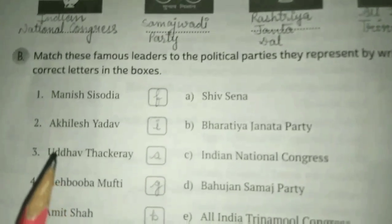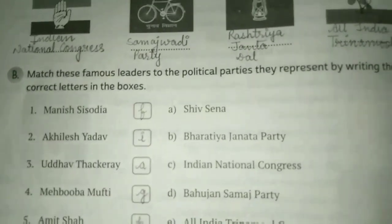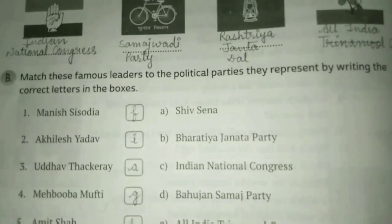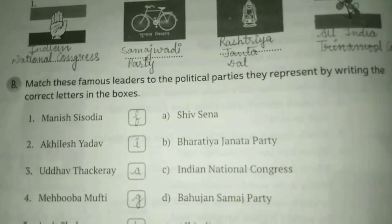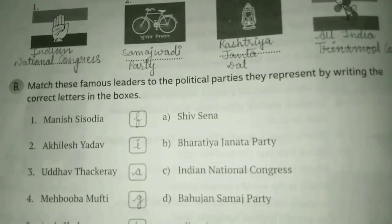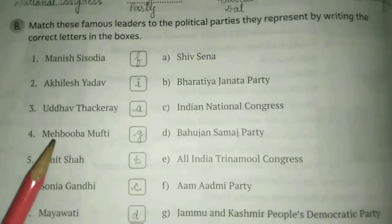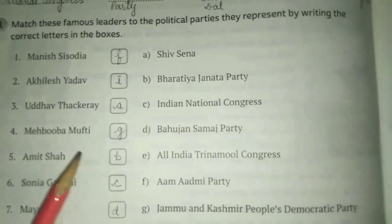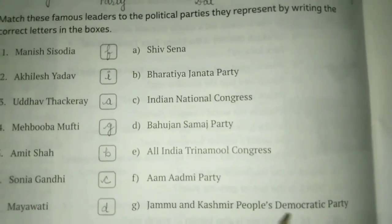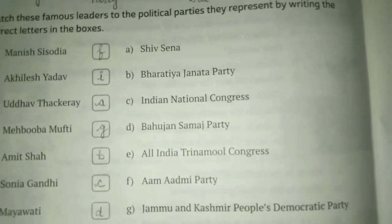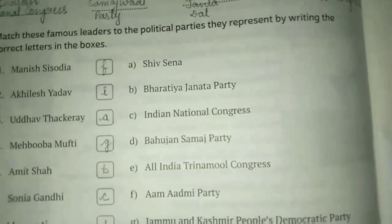The third name is Uddhav Thackeray — he represents Shiv Sena. It is a right-wing Marathi regional and Hindu nationalist political party founded in 1966 by Bal Thackeray. The next name is Mehbooba Mufti — she represents Jammu and Kashmir People's Democratic Party. It is a state political party in the union territory of Jammu and Kashmir, India.